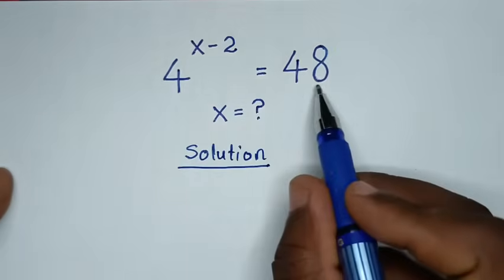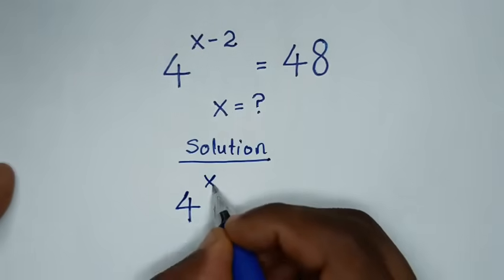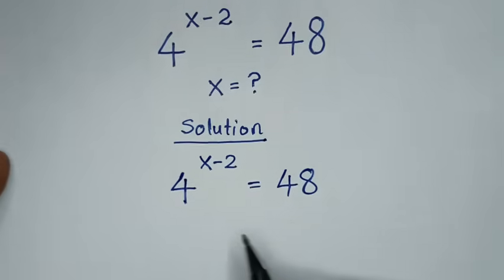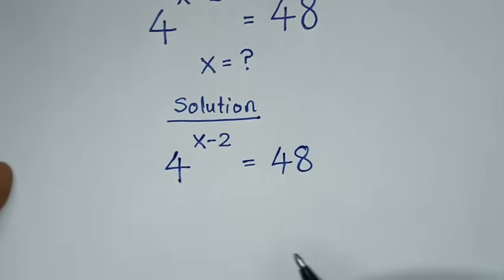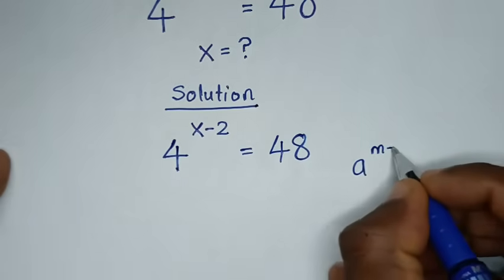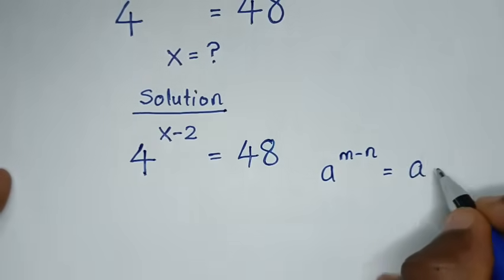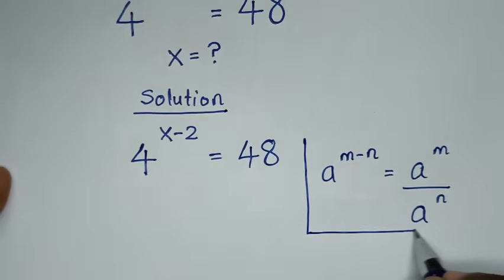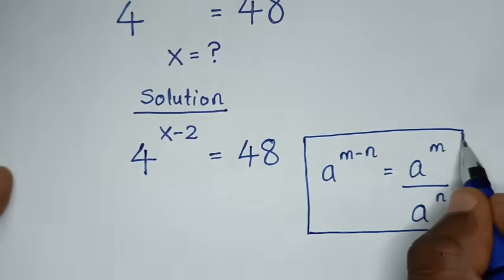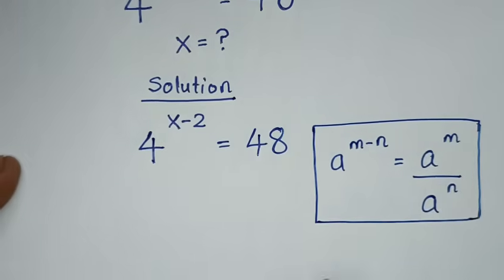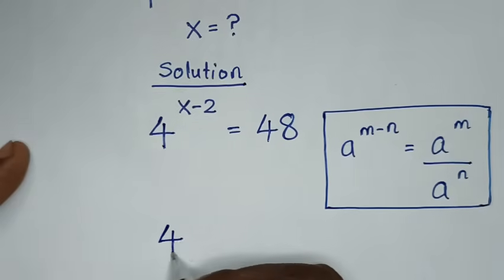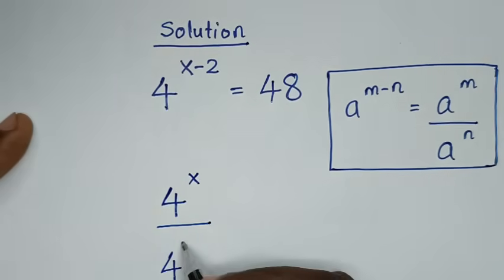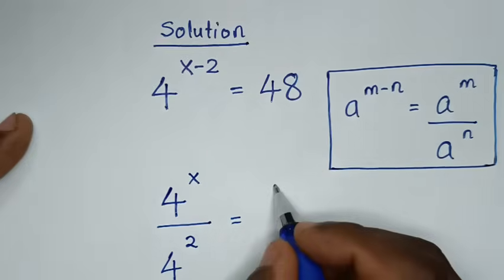From this problem, which is 4 power of x minus 2 is equal to 48, we look into this part. This part is in the form of the rule which is a power of m minus n, which is equal to a power of m over a power of n. By applying this rule into this form, it will be 4 power of x over 4 power of 2, so 4 power of 2 is equal to 48.